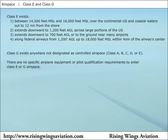Class G airspace is uncontrolled airspace. It is all the airspace that is not designated as Class A, B, C, D, or E. Although Class G airspace is uncontrolled, Federal Aviation Regulations still apply.